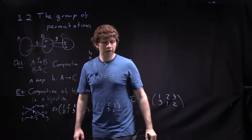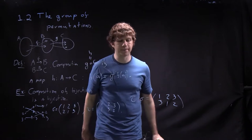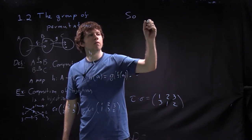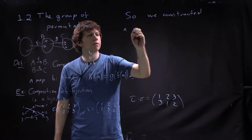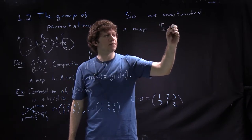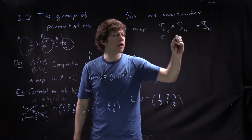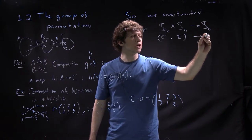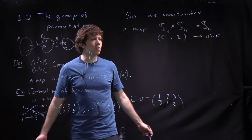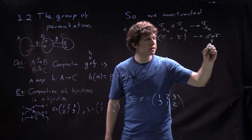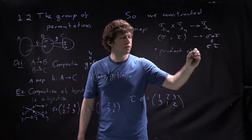That's a new permutation. Of course we have to get a new permutation of the same set, because composition of bijections is a bijection. So we constructed a map from Sn × Sn to Sn, which takes permutation sigma and permutation tau and sends the pair (sigma, tau) to the permutation: first apply sigma, then apply tau. That's called a product of permutations, denoted sigma times tau.